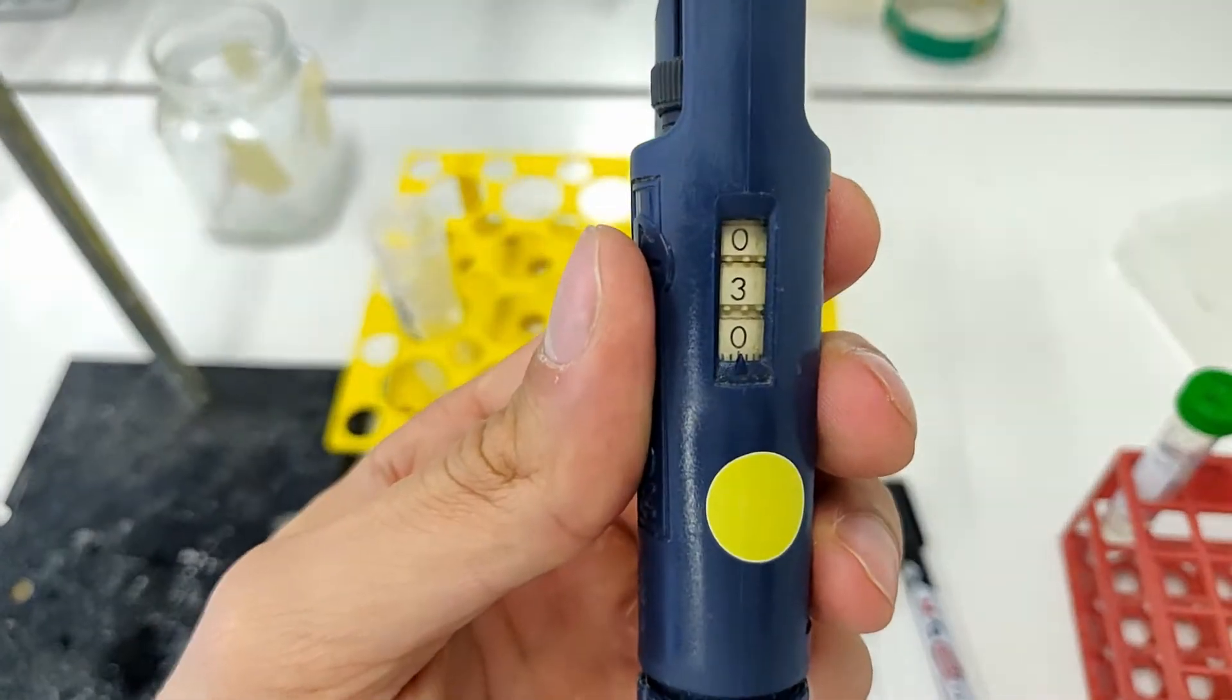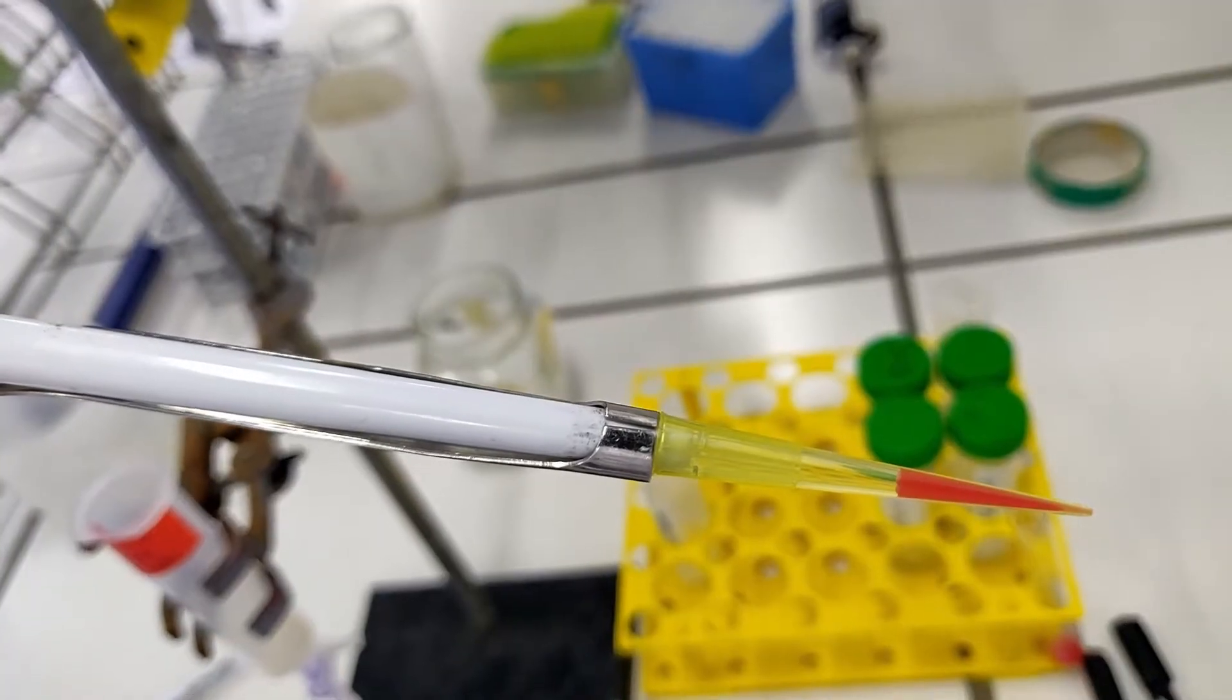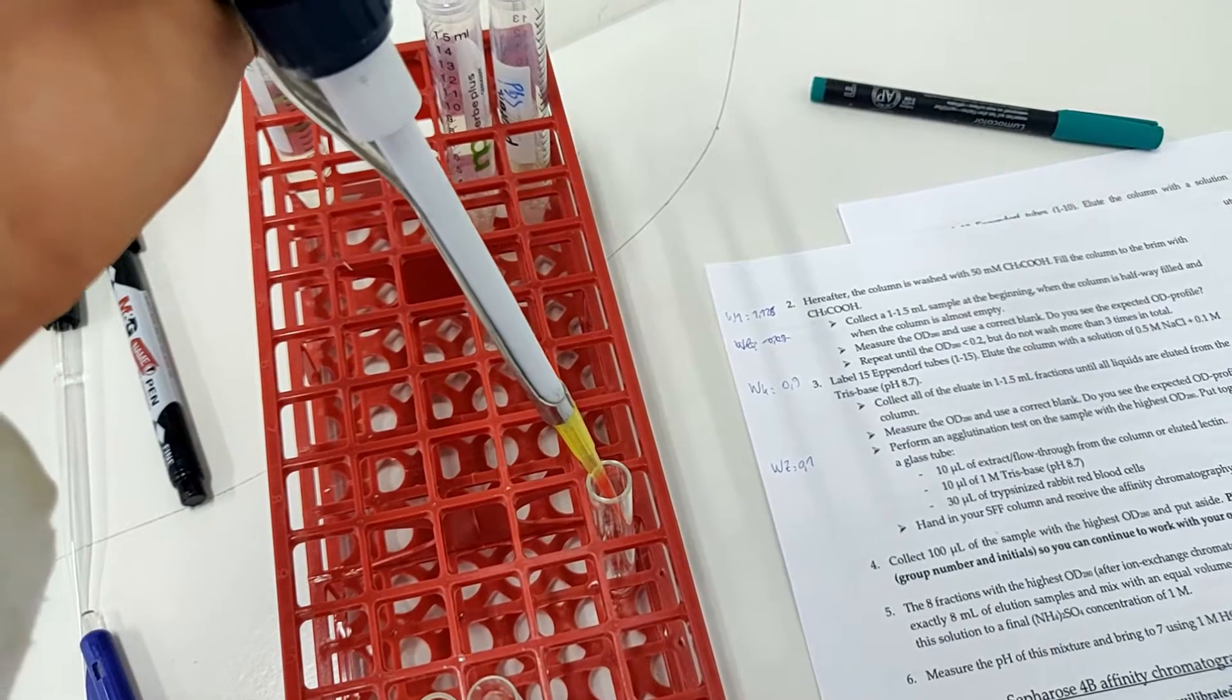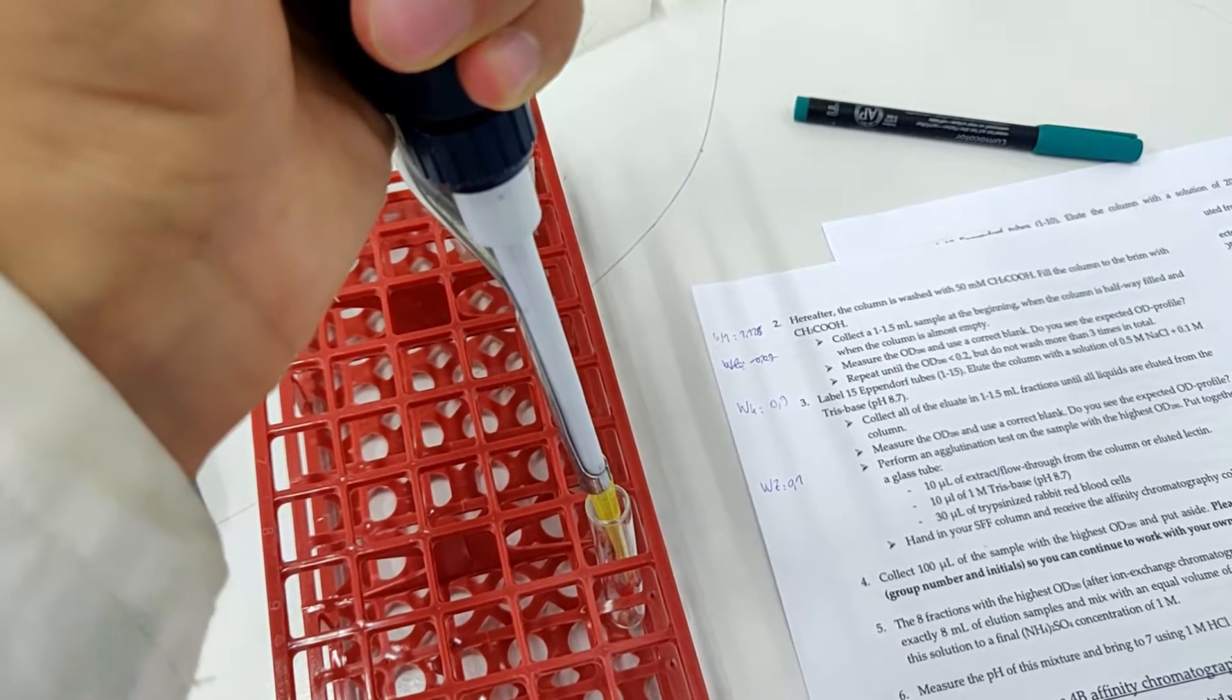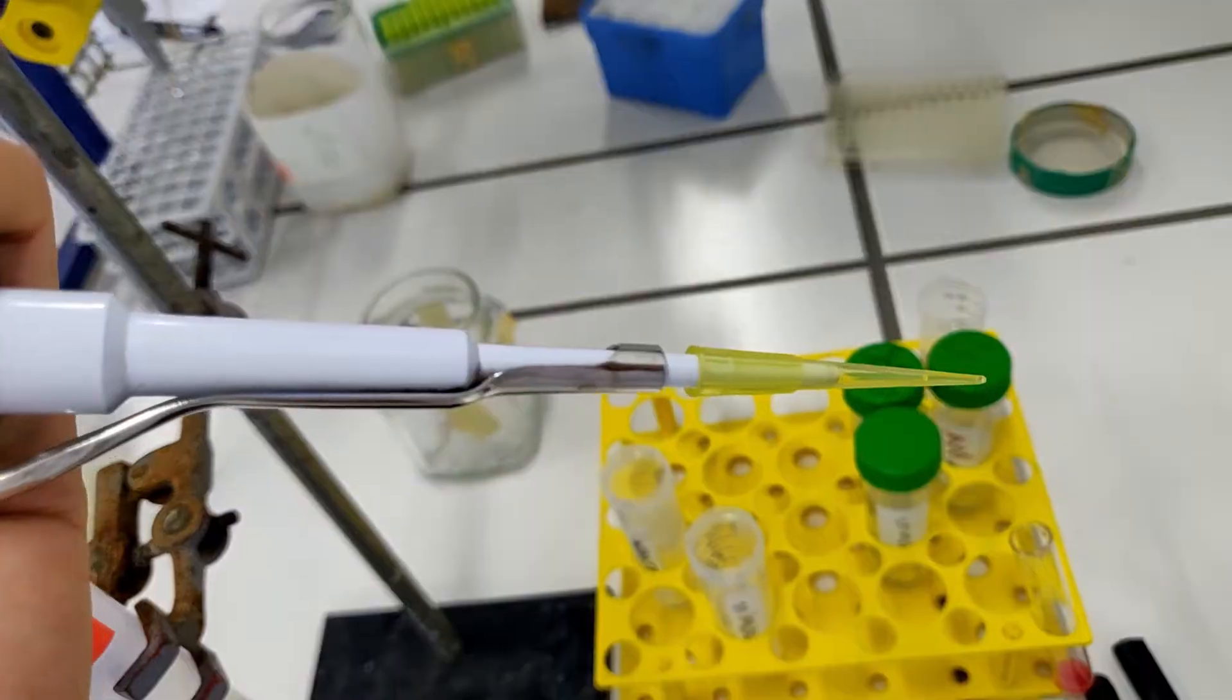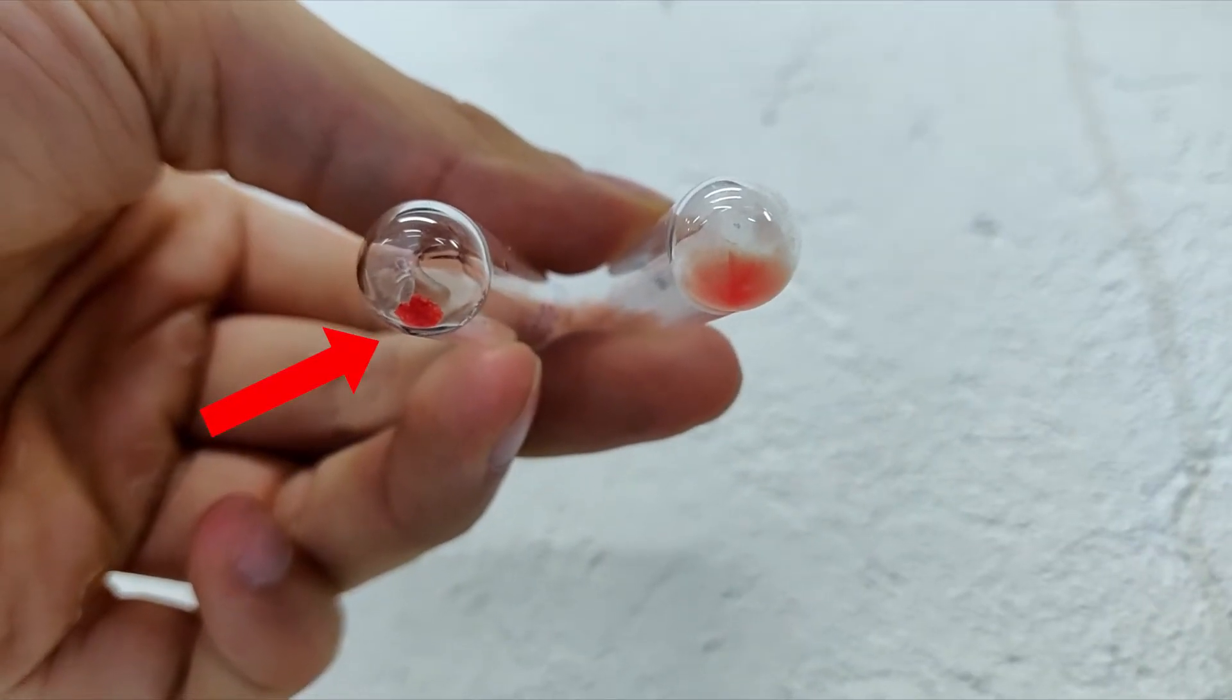an agglutination assay was performed on it. As I said before, lectins can bind carbohydrates. GNA can recognize and bind with carbohydrate structures on the cell surface of red blood cells. GNA thereby causes cross-links between red blood cells, causing clotting of the blood, as you can see here.